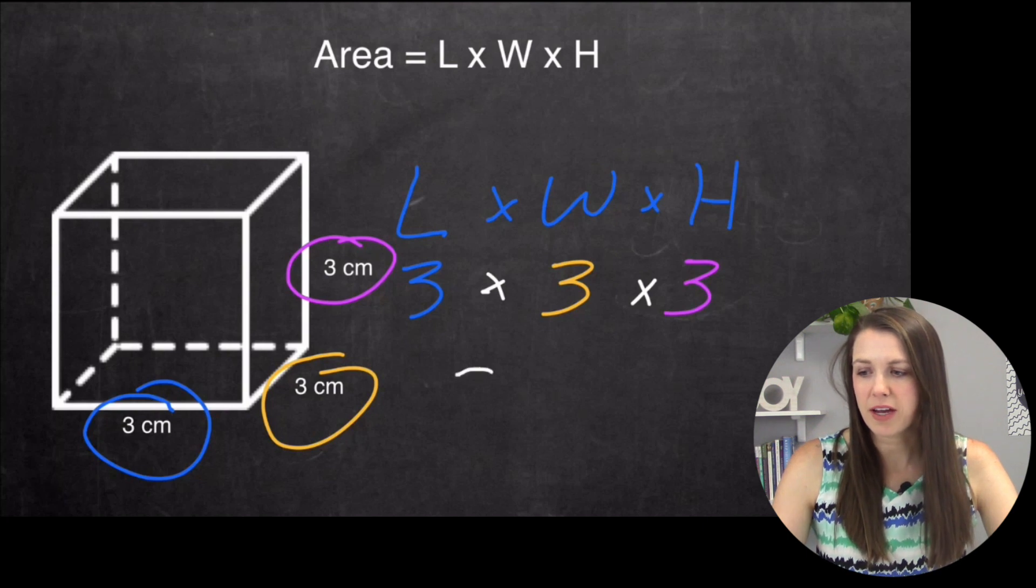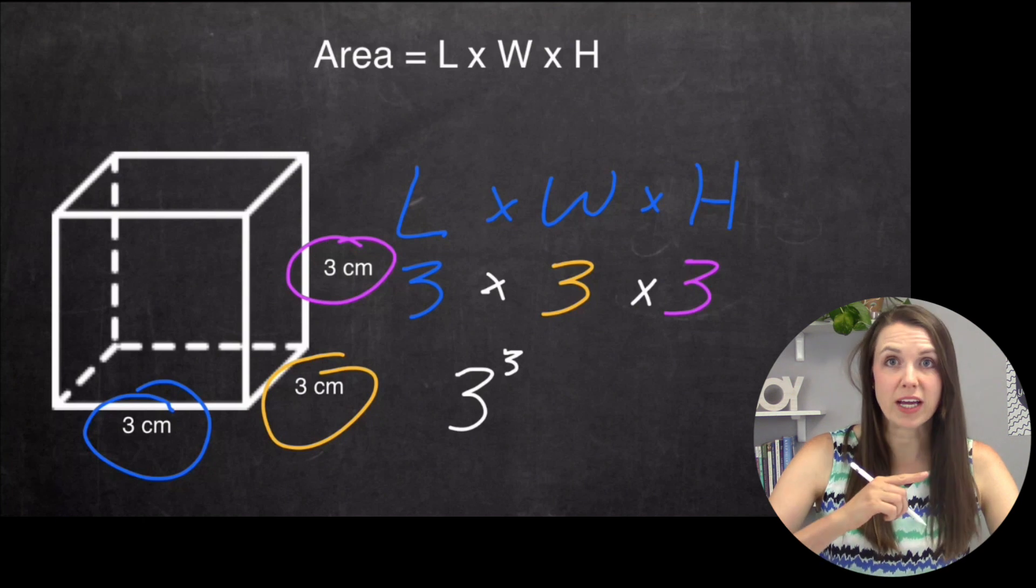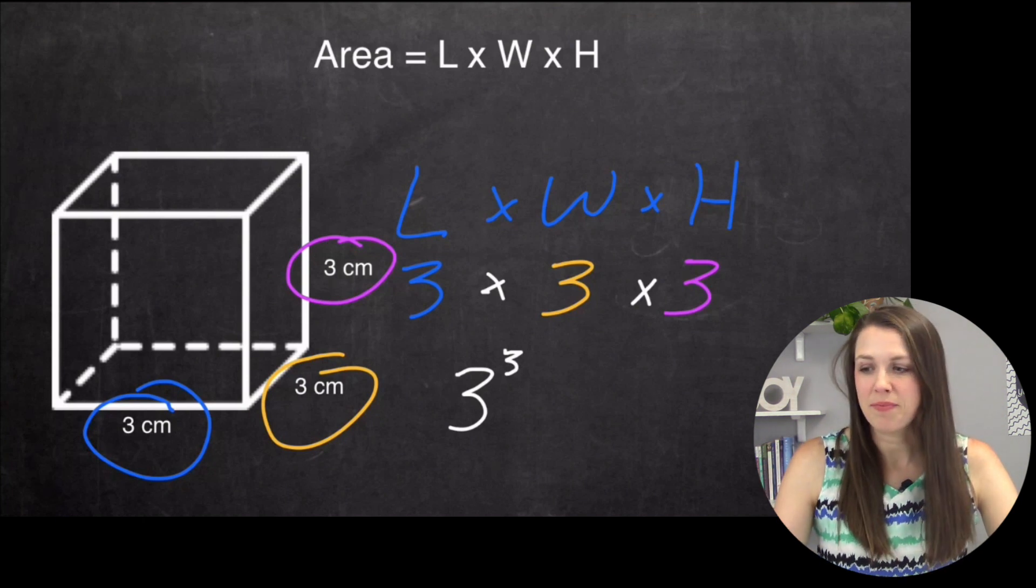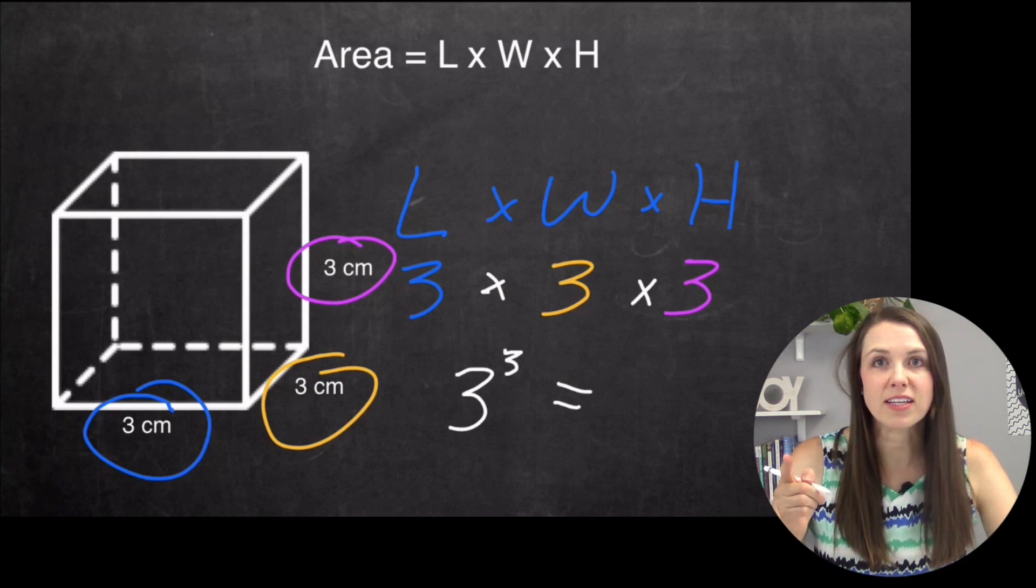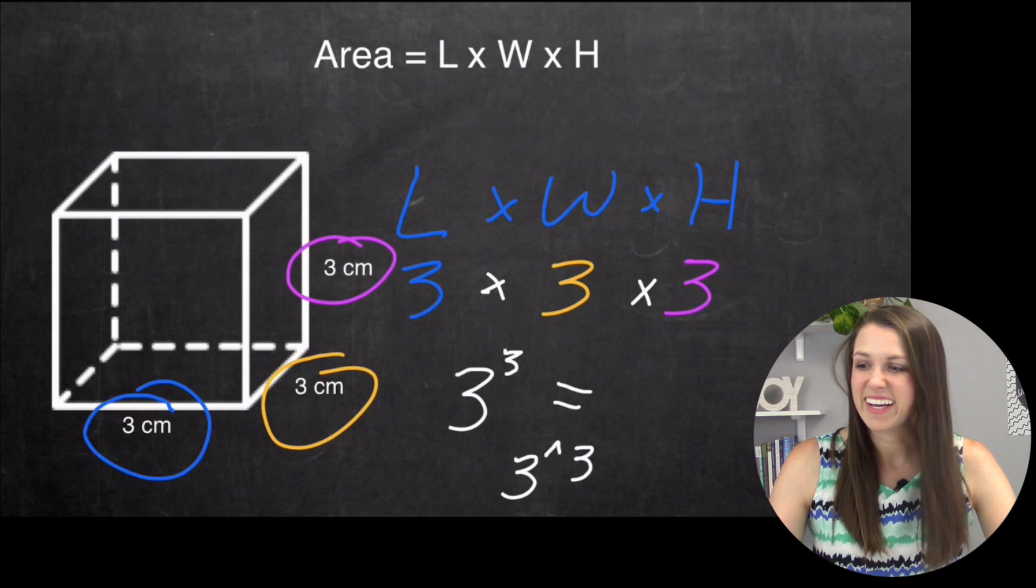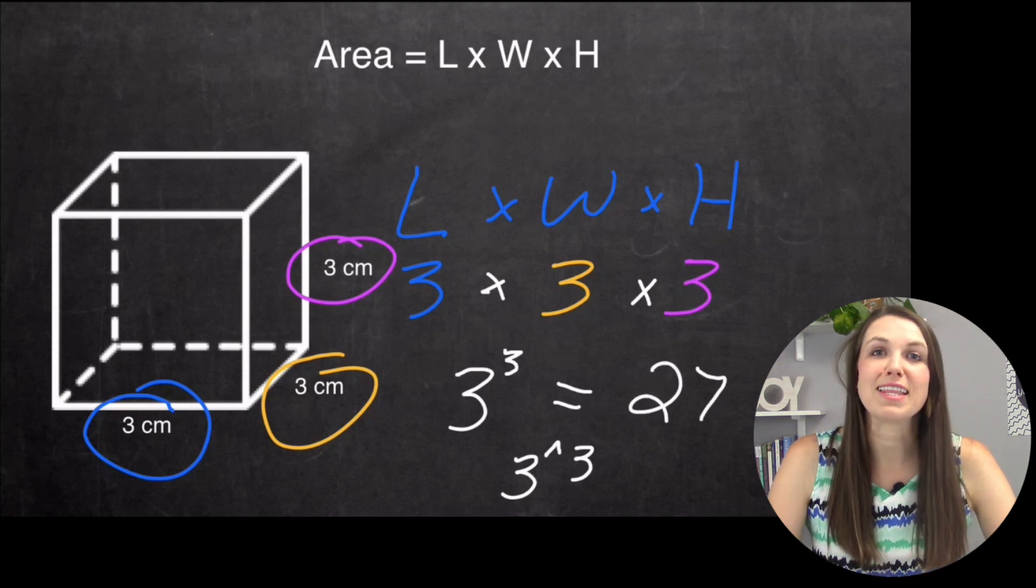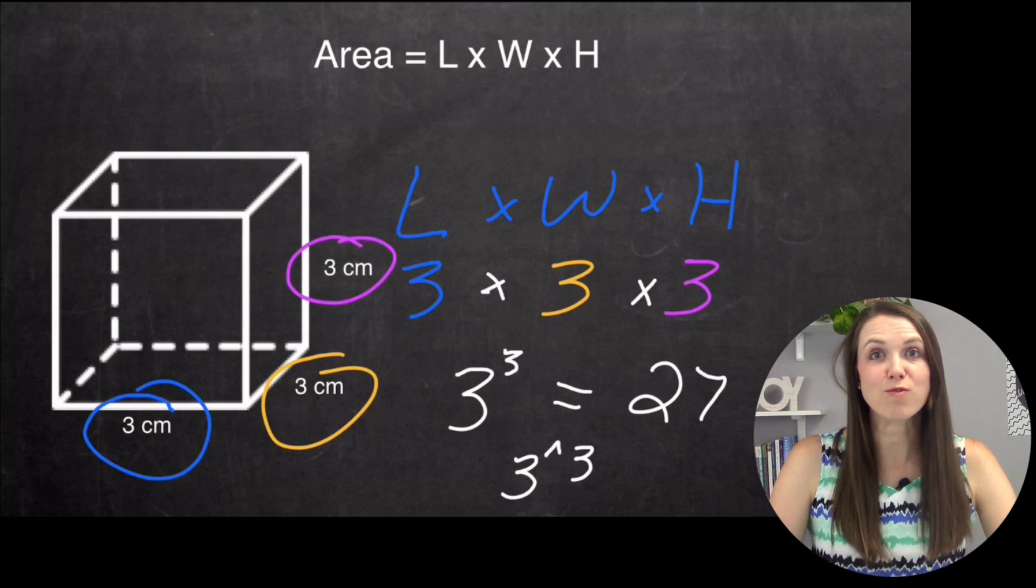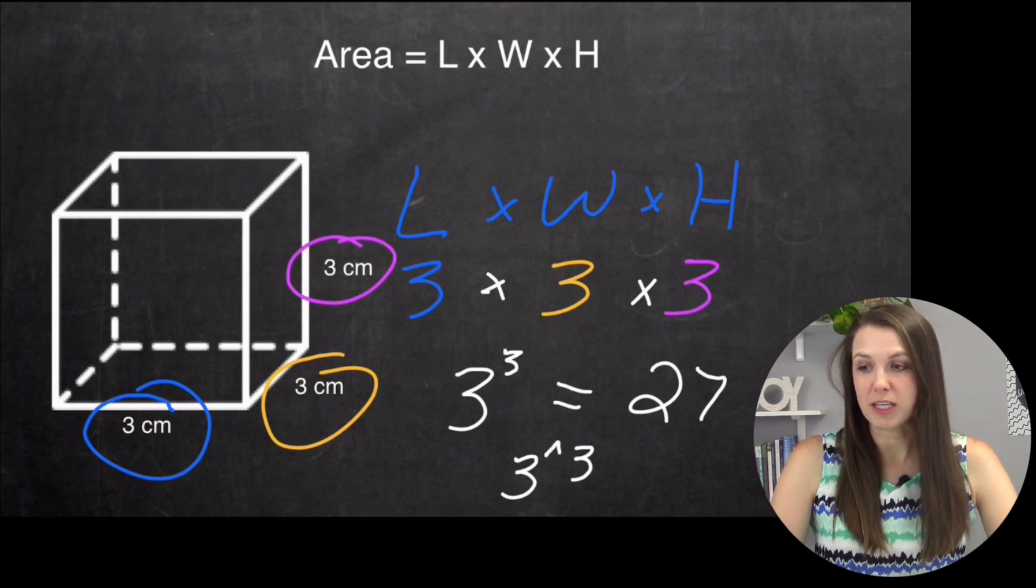That is three to the power of three, because I'm multiplying three, three times. If you're able to use a calculator, you would simply just type in three, and then the little carrot button, and then three, and that would give you your answer. But I know that three times three times three is simply going to be 27. There are a couple different ways that you can do it. That is the volume of my cube here.